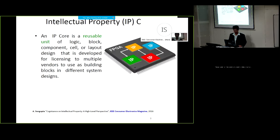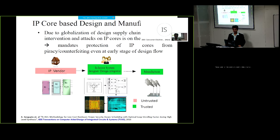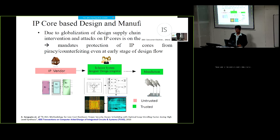An IP core is a reusable unit of logic block component layout design, developed for licensing to multiple vendors as a building block of multiple system designs. This IP core-based design and manufacturing process is quite vulnerable to threats in the context of globalization of the design supply chain, where there is a lot of intervention of adversaries and external people. It mandates protection of IP cores from very popular attacks such as piracy and counterfeiting, from the very early stages of the design flow.